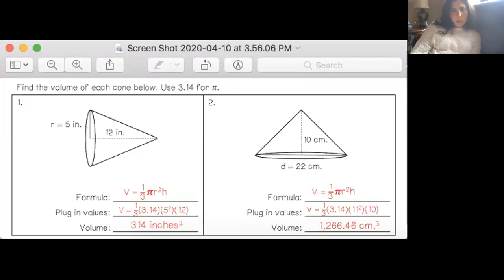All right guys, so we are going to review the practice problems. Number one: we know to get the volume of a cone, we have volume equals one third of the area of the base, pi r squared. Here the radius is five, so that's why it's 3.14 times five squared times the height.